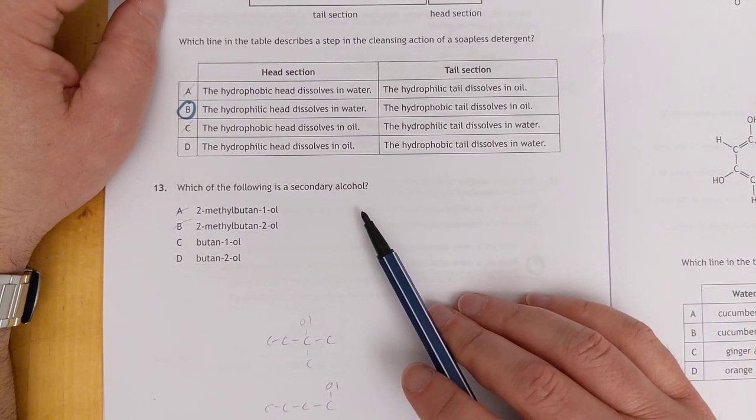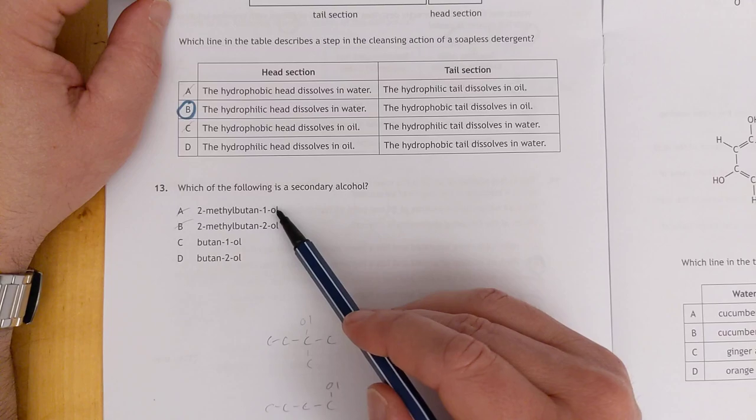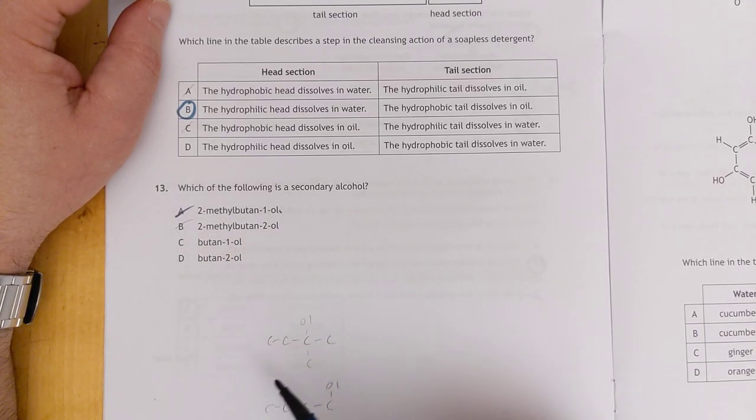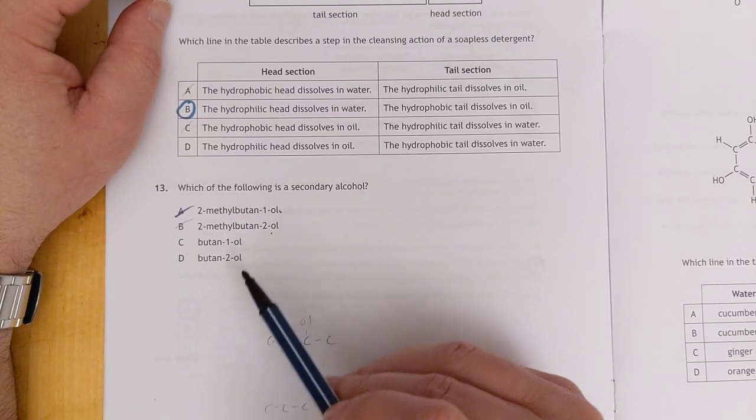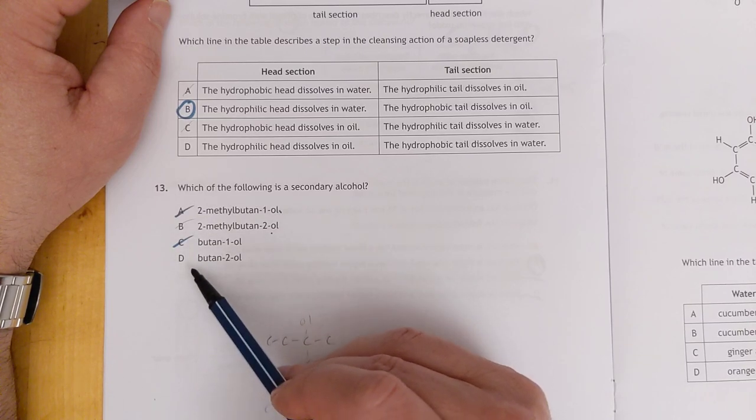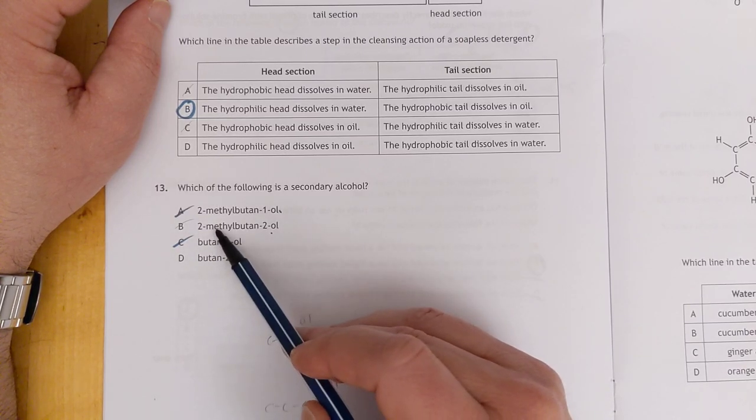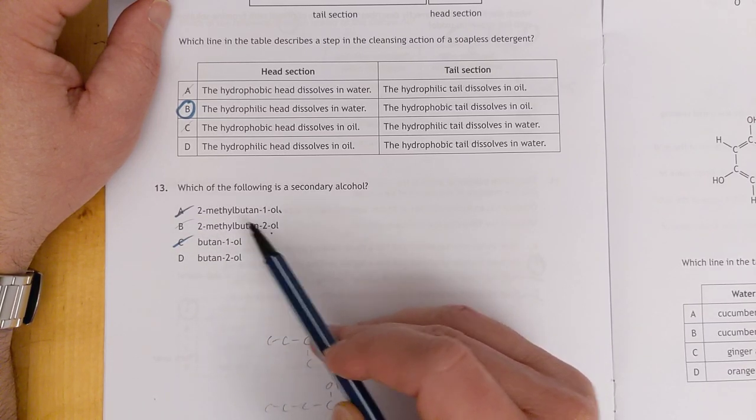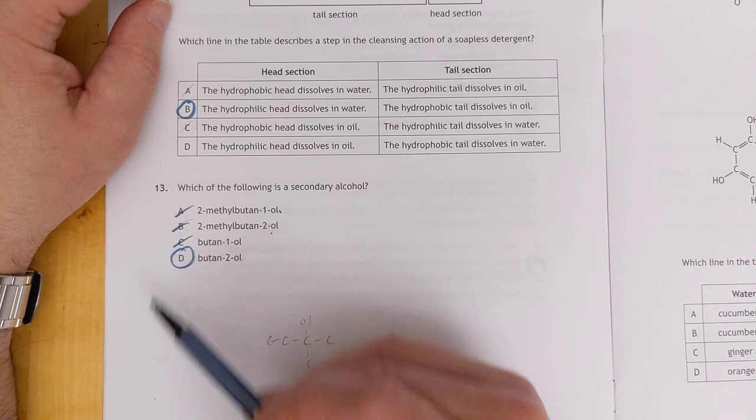Which of the following is a secondary alcohol? Butan-1-ol is not. This person scored out, which is nice. Two-methylbutan-2-ol? That's because the methyl is on the same carbon as the hydroxyl. That's a tertiary alcohol. So it's D.